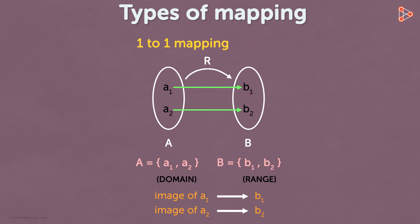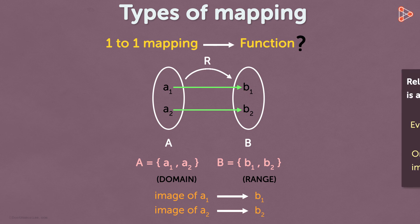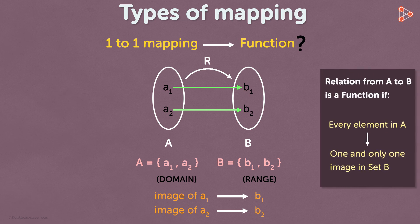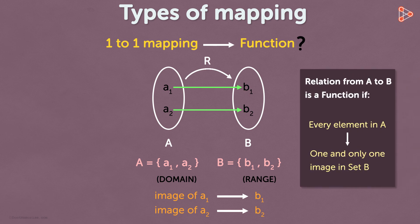If the mapping is one to one, then the relation is a function. This is because every element in set A has one and only one image in set B. As we had seen in the previous lesson, this is the only condition for a relation to be a function.